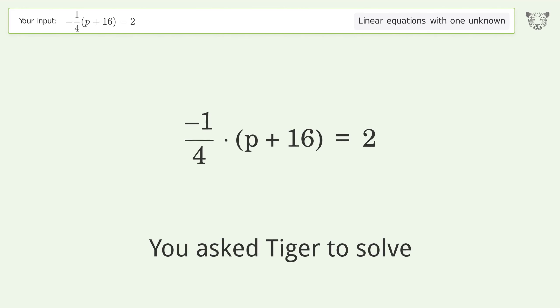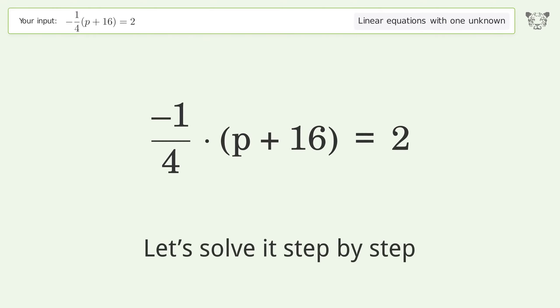You asked Tiger to solve this linear equation with one unknown. The final result is p equals negative 24. Let's solve it step by step. Simplify the expression, multiply the fractions.